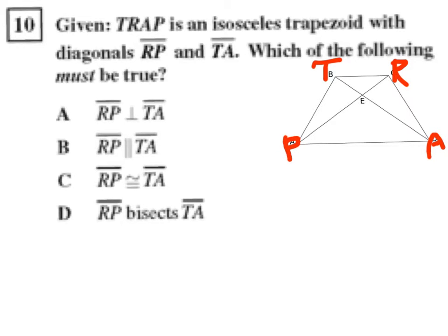Okay, and they said that this isosceles trapezoid, well, they didn't say this, but knowing this is an isosceles trapezoid, this line segment is congruent to this line segment. And it has this line segment, which is a diagonal RP, and it has this line segment, which is a diagonal TA.